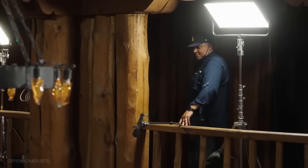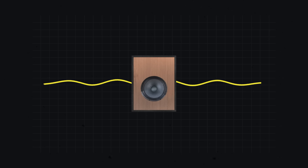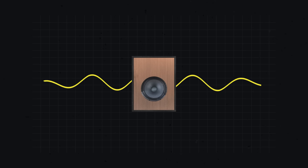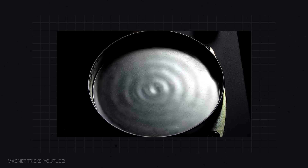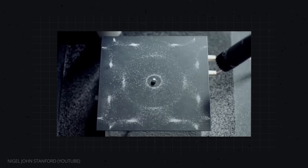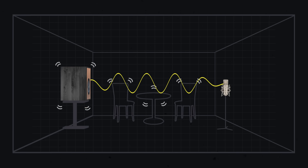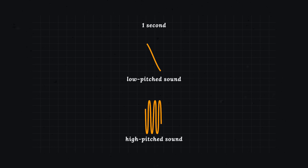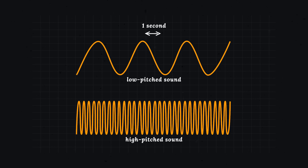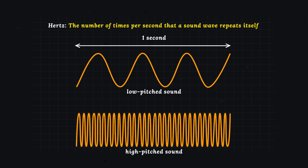But in order to record sound well, one must know the basics of its physics. At its essence, sound is a disturbance that creates an acoustic wave through an elastic medium like liquid, gas, or solid. This disturbance comes from a sound source, which prompts vibrations in its surroundings. Sound waves can be measured in frequency using the unit hertz, which is the number of times per second that a sound wave repeats itself.